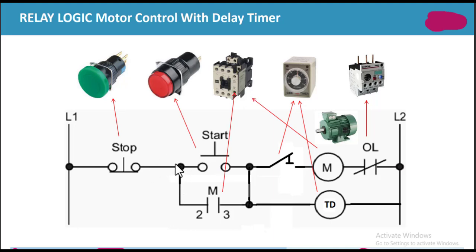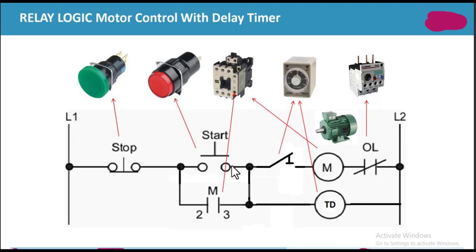The contactor's normally open contact is connected in parallel to the start switch. When this contactor is energized, the current has an alternative path to flow to the motor. When the timer is energized, it closes this normally open switch, and current can flow through to the motor so the motor will perform its functions.